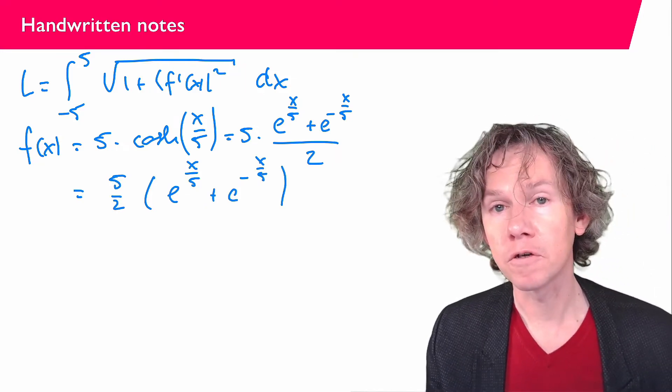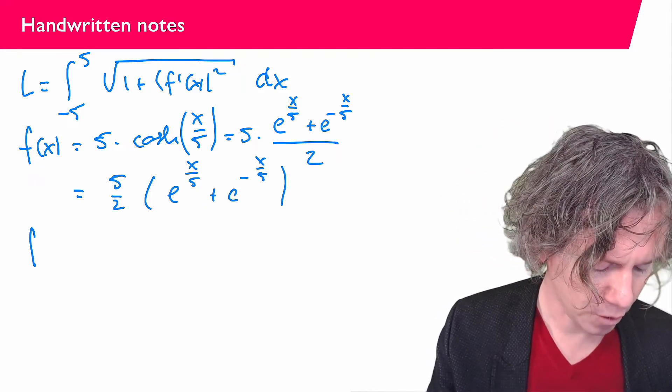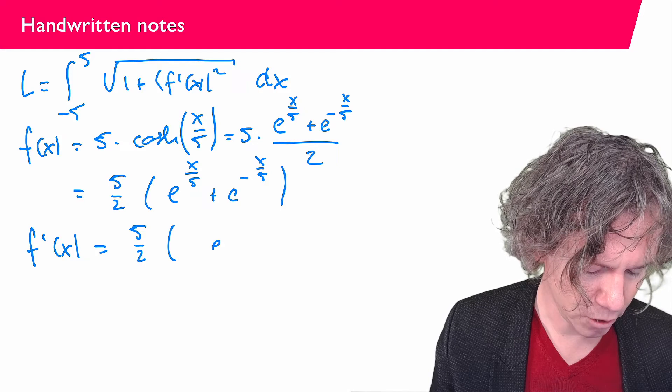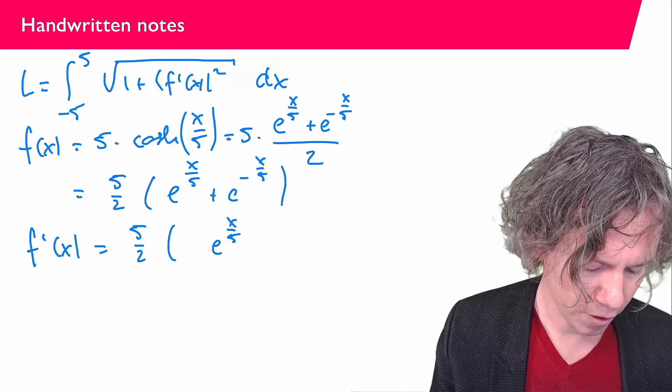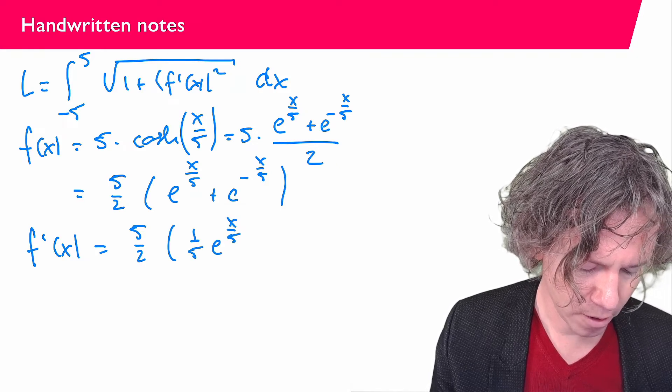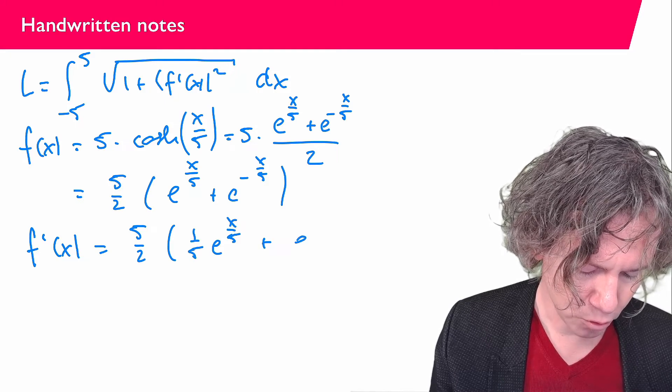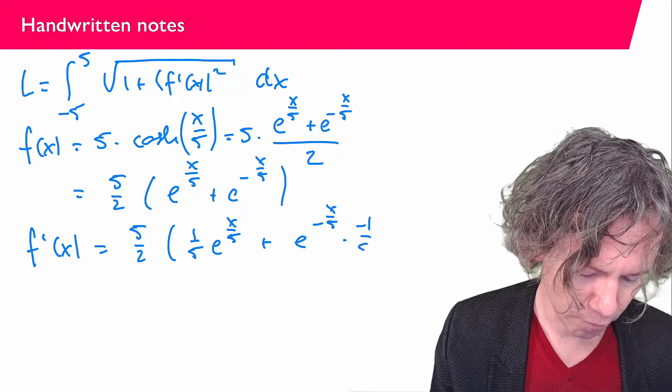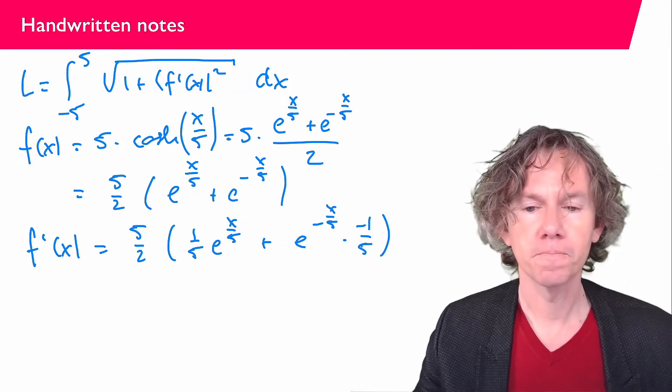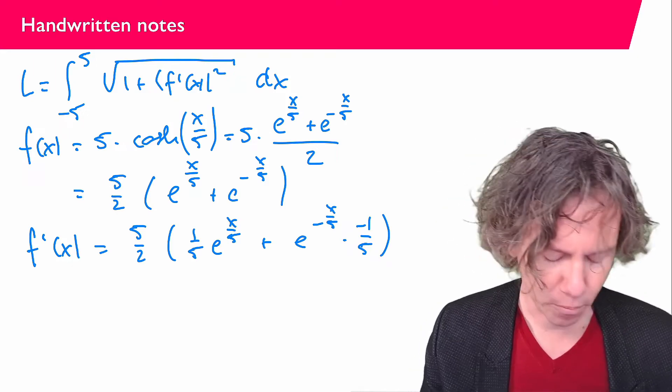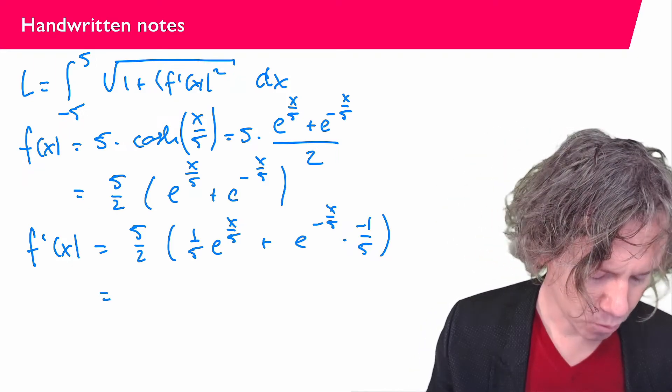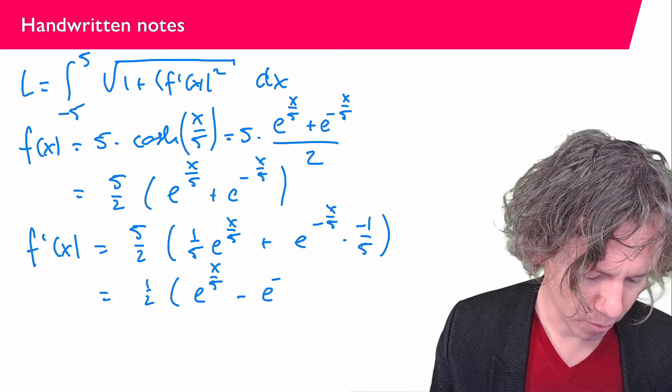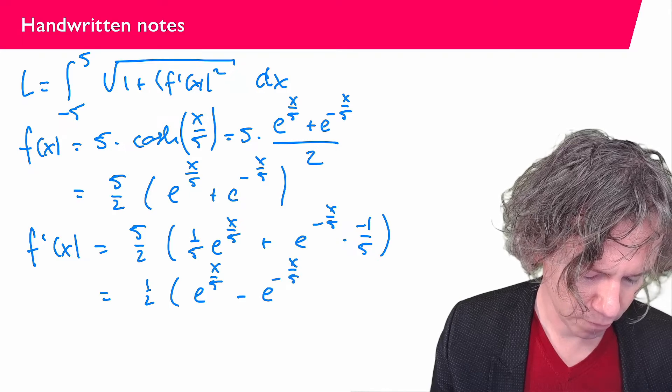Because I'm going to be needing the derivative and that's easy to compute like this. So now we have f prime of x. It's 5 over 2 and then we get e to the power x over 5, with the chain rule times 1 over 5, plus e to the power minus x over 5 with the chain rule times minus 1 over 5. And you see that the 5 drops out. We get 1 half e to the power x over 5 minus e to the power minus x over 5.